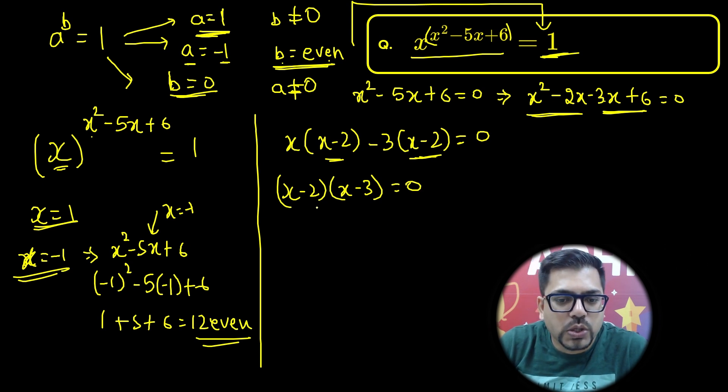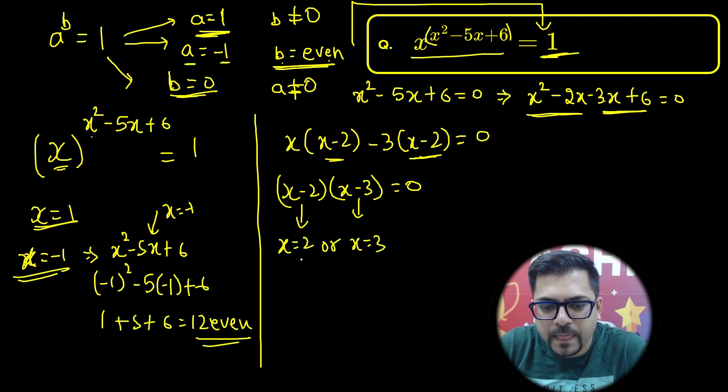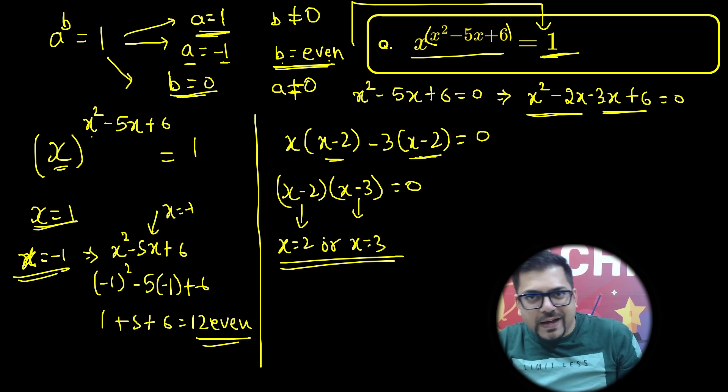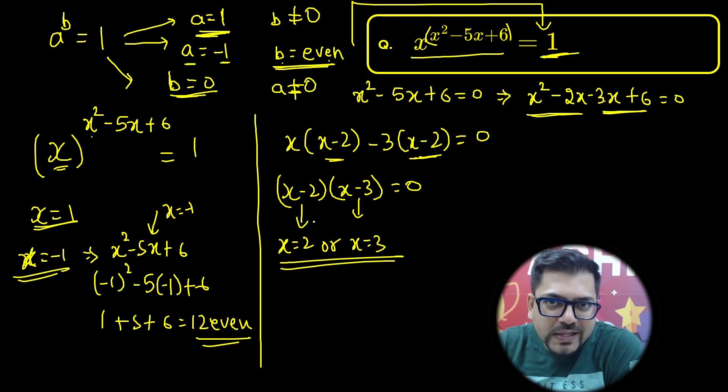Equals 0. So either the first bracket will be 0 or the second bracket will be 0, and hence you'll get x equals 2 or x equals 3. So at the end of this entire question, what we have got as a solution?